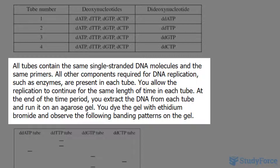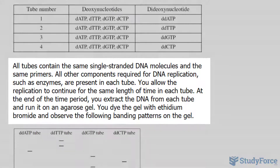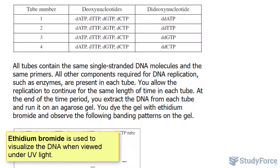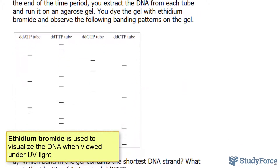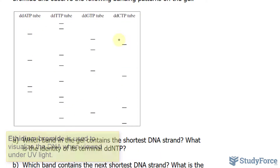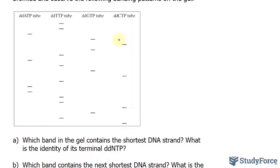At the end of the time period, you extract the DNA from each tube and run it on an agarose gel. You dye the gel with ethidium bromide and observe the following banding patterns on the gel. This is what the gel looks like and these are the bands that appear. For simplicity and for this demonstration, we are using only 20 bases in this DNA that is 700 base pairs long.